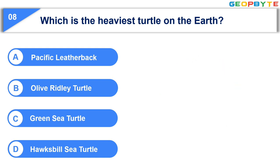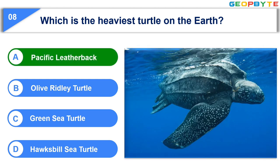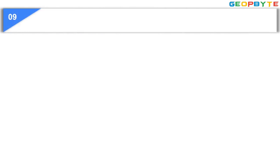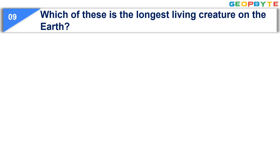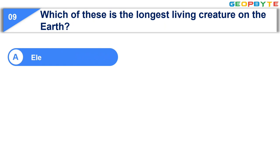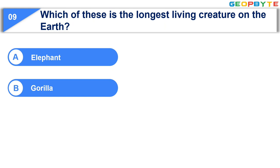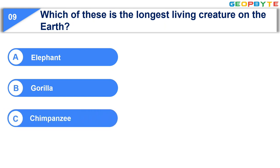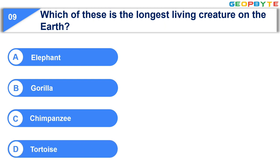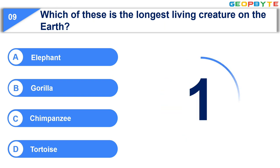Your time is up and the correct answer is Option A: Pacific leatherback. The ninth question is: Which of these is the longest living creature on the earth? Option A: Elephant. Option B: Gorilla. Option C: Chimpanzee. Option D: Tortoise. Your time is up and the correct answer is Option D: Tortoise.